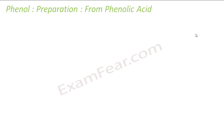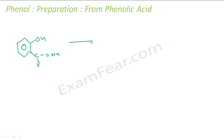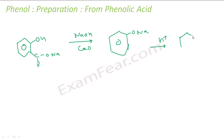Now I'll try to prepare phenol from phenolic acid. What we can do is perform distillation with soda lime. This is my phenolic acid — sodium phenoxide with a COONa group. I react it with NaOH and CO using soda lime. This gives me sodium phenoxide (Ph–ONa), and then I react that with H⁺ in acid to get phenol (Ph–OH).